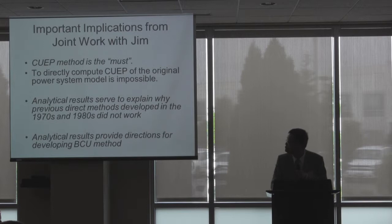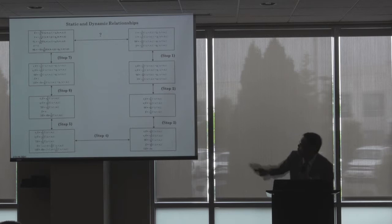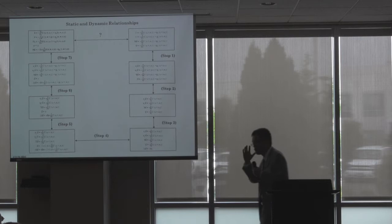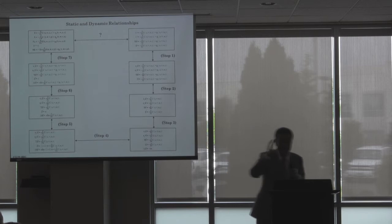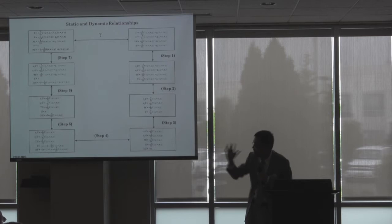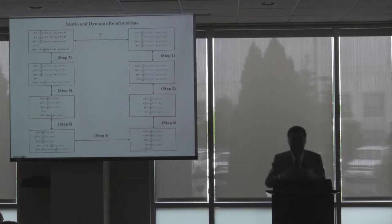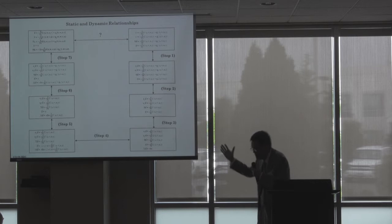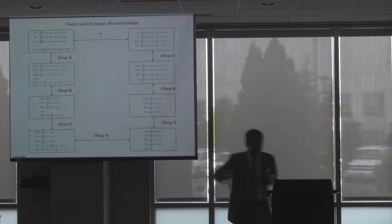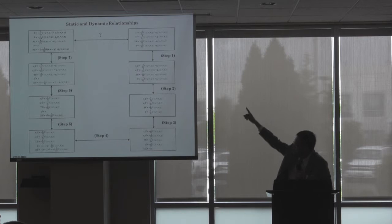That's why we pointed out the direction of the BCU method. For the original power system model, it's impossible to compute the controlling UEP. So we define an artificial reduced model that tries to capture some static and dynamic relationships of the original model. We compute the controlling UEP of the reduced system and then map back to the original system — after seven steps. Under certain conditions, you can prove the reduced system's controlling UEP corresponds to the controlling UEP of the original system.